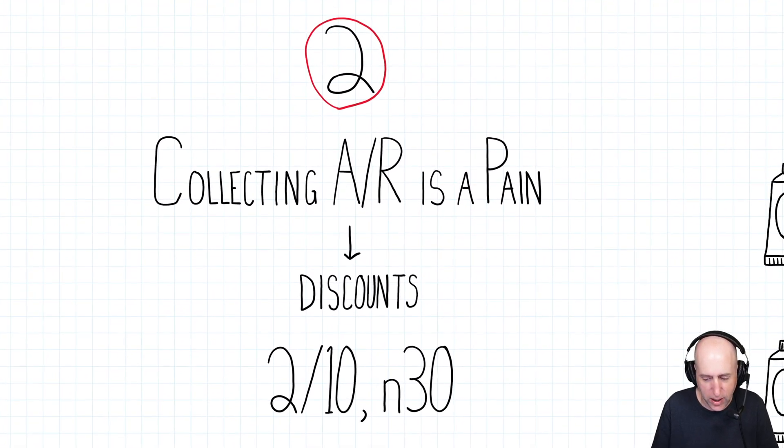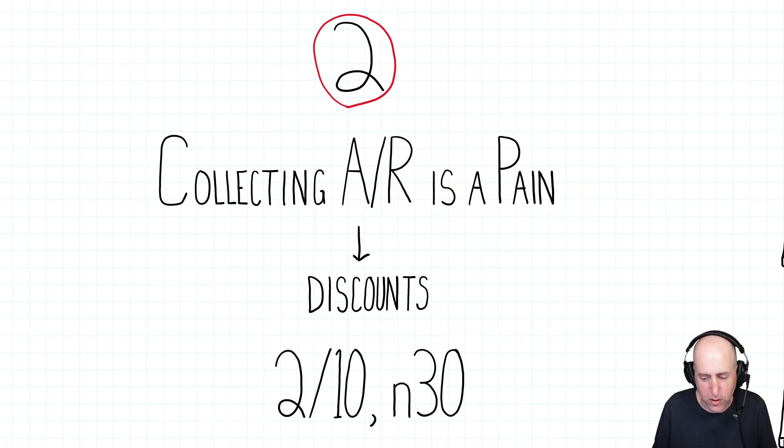A second challenge that gets introduced this chapter is related to something we learned last chapter, which is it sucks to be owed money. You have people owing you money if you're operating a business. People owe you money all the time, and it sucks to be owed money. There is a stick version of getting your money, which is you wait until the due date and then you start sending nasty letters to the people who haven't paid and you're chasing them. And what we find is it's very labor intensive and it's a pain in the neck.